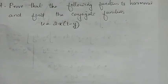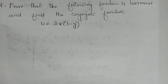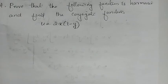If f(z) = u + iv, then u and v are harmonic functions and they obey CR conditions — the Cauchy-Riemann conditions. Now, prove that the following function is harmonic and find the conjugate function.